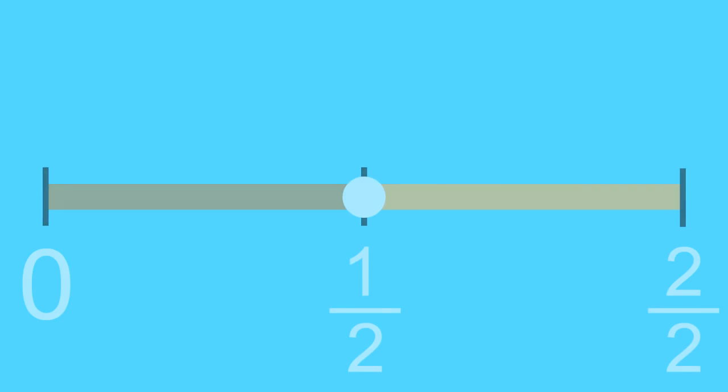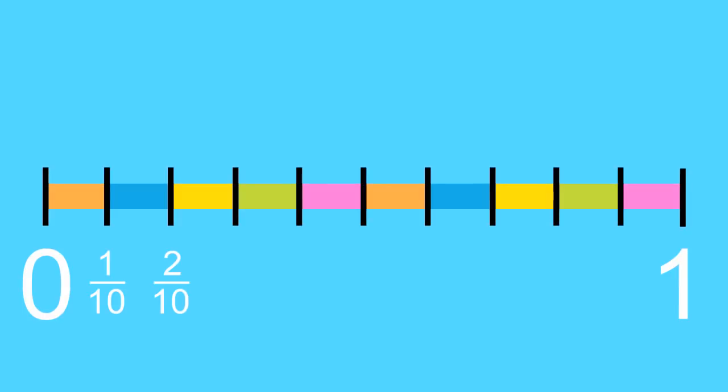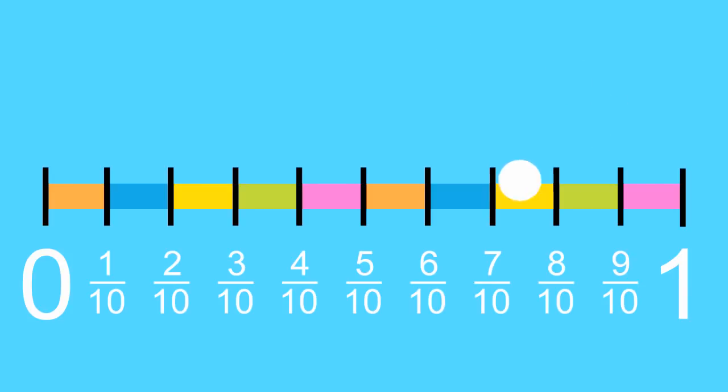How about a harder one? Let's draw 7 tenths. Here's our number line again. If we divide it into 10 even pieces, it looks like this. Let's label each tenth. And here's the location of 7 tenths, right here.